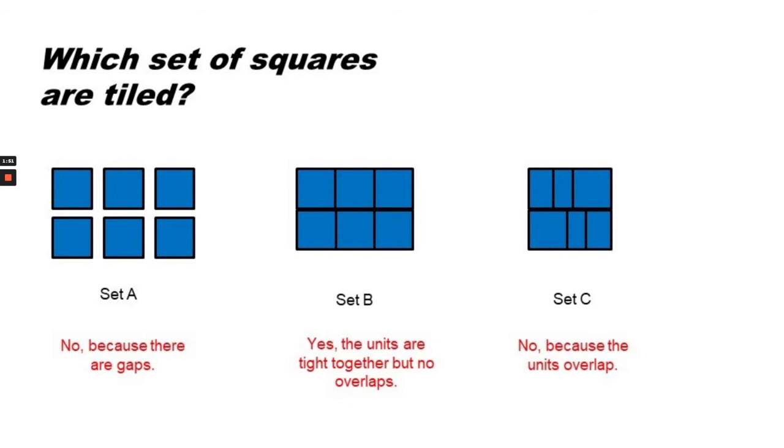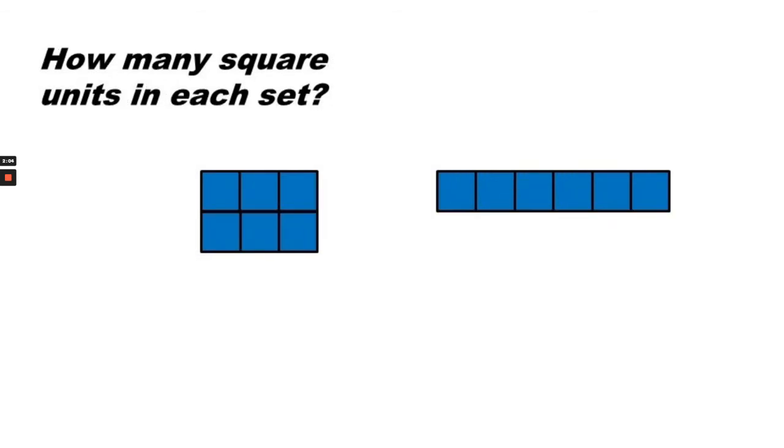Yes, it's Set B because the units are tight together but have no overlaps. How many square units do you see in each set?